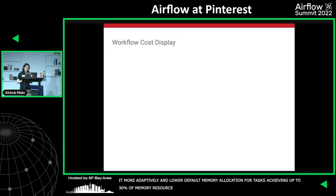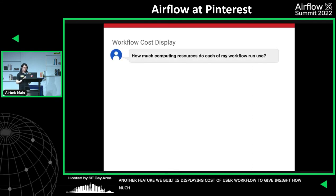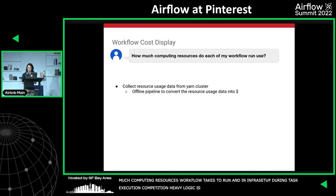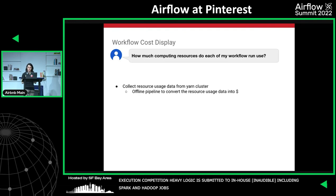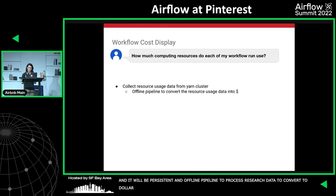Another feature we built is displaying the cost associated with a workflow to give users insight into how much computing resources a workflow takes to run. In our infra setup, computation-heavy logic is submitted to our in-house YARN cluster including Spark and Hadoop jobs. The task pod polls execution status from YARN until it completes, and resource usage is persisted. An offline pipeline processes this data and converts it into dollar value, which is rendered on the workflow system's UI.